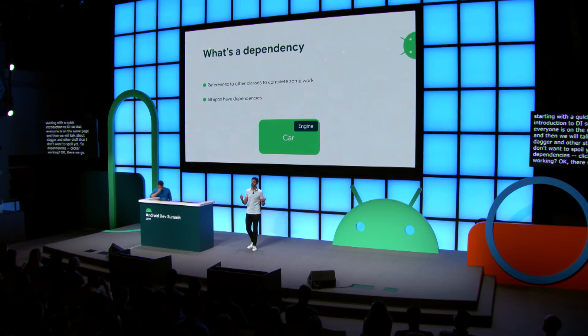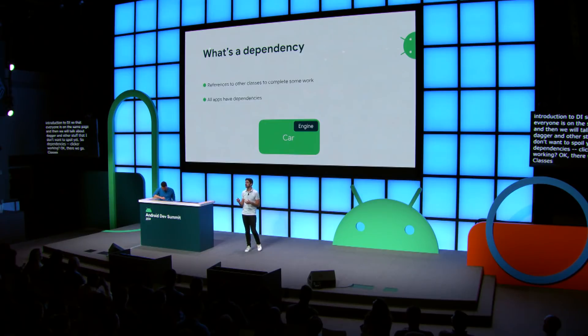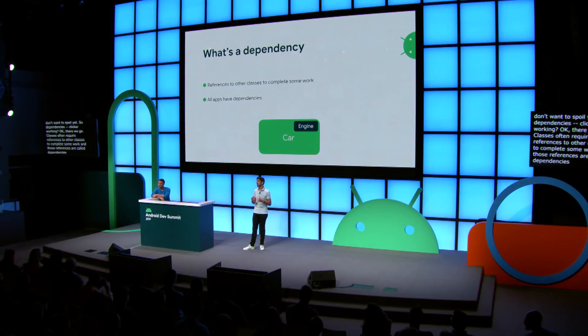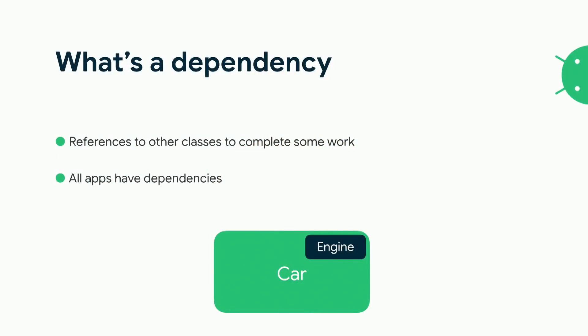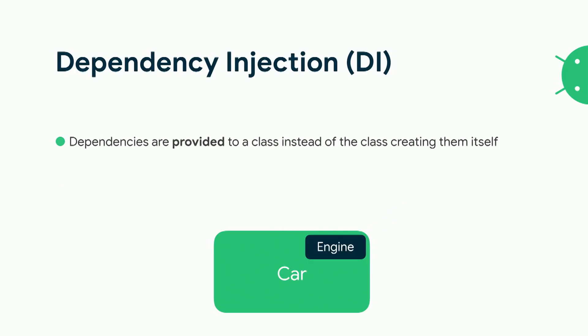Classes often require references to other classes to complete some work, and those references are called dependencies. Every single application has to deal with dependencies one way or another. As we can see in the diagram, a car cannot work without an engine. So we can say that engine is a dependency of car, or that car depends on engine. And with dependency injection, those dependencies are provided to a class instead of the class creating them itself. So instead of car building its own instance of engine, engine will be provided to car — for example, at creation time.